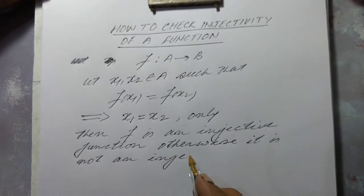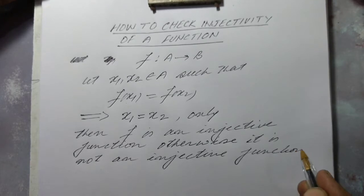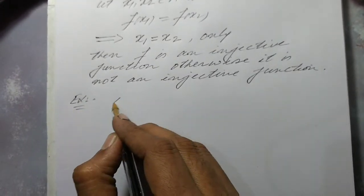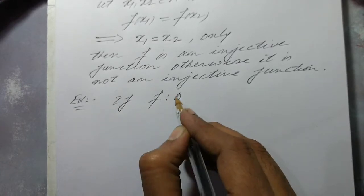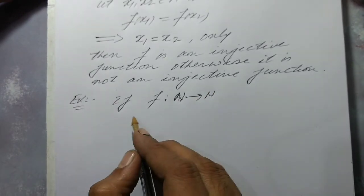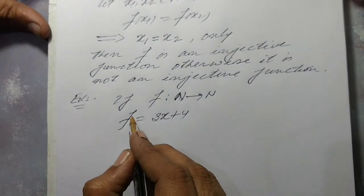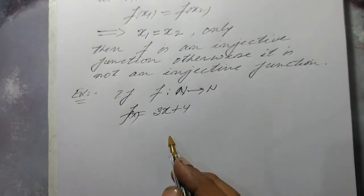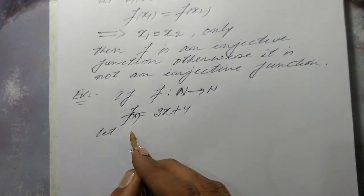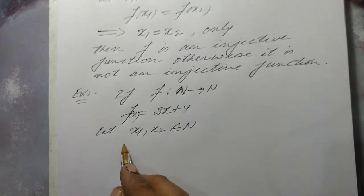For example, if f is a function from N to N and f is defined as 3x plus 4, then in order to check the injectivity of this function we take x1 and x2, two arbitrary elements from domain N such that f(x1) is equal to f(x2).